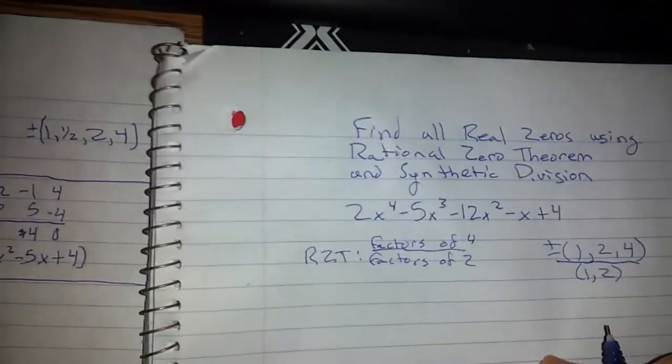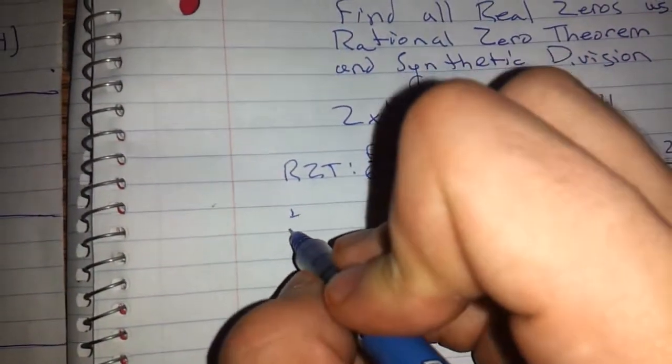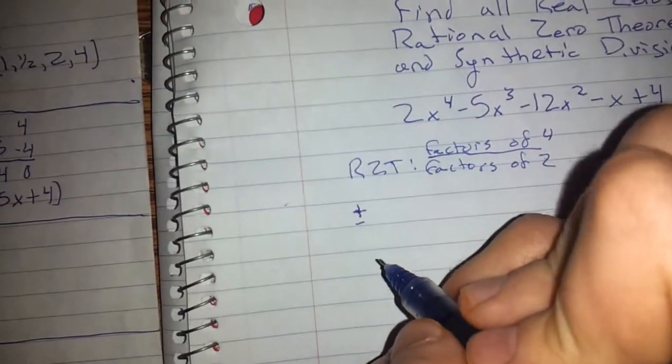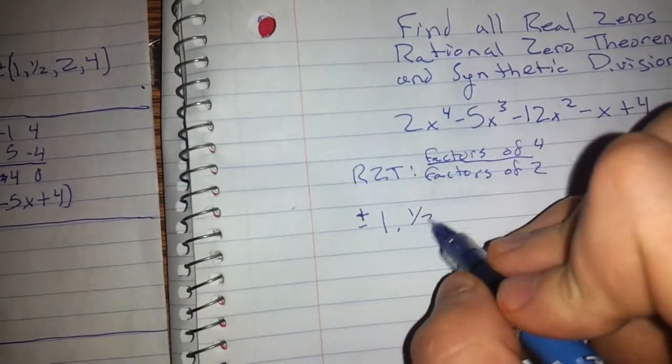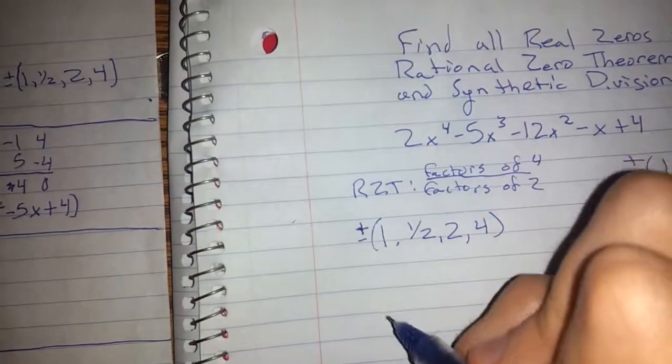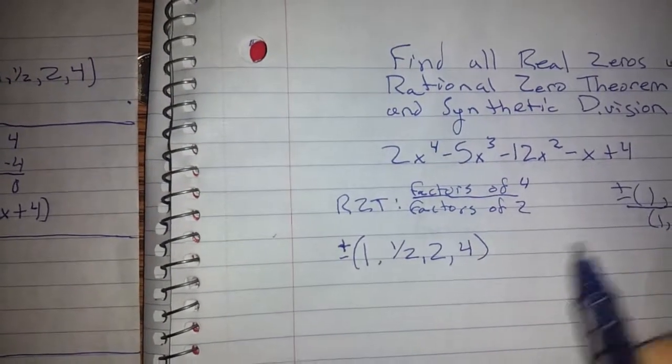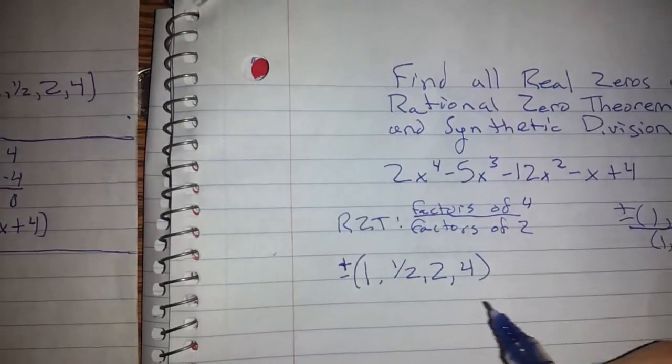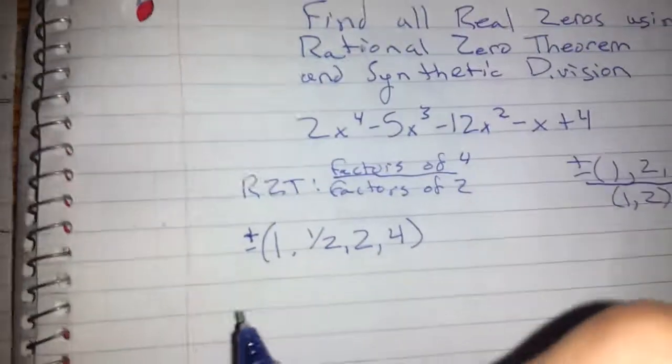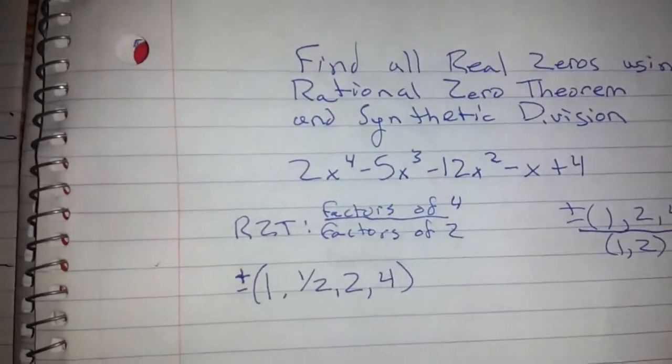This comes out to be plus or minus 1, 1/2, 2, and 4. This is just 1 over 1, then 1 over 2, then 2 over 1, then 4 over 2 which is still 2, and 2 over 2 which is still 1, and 4 over 1.